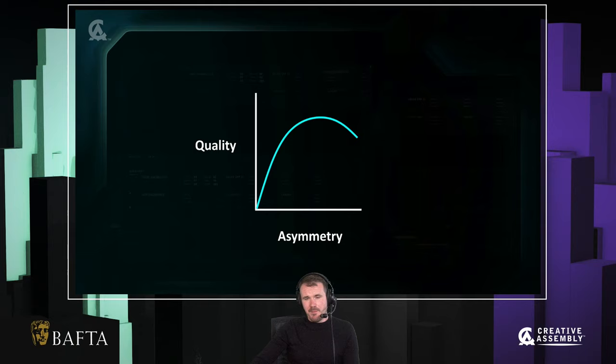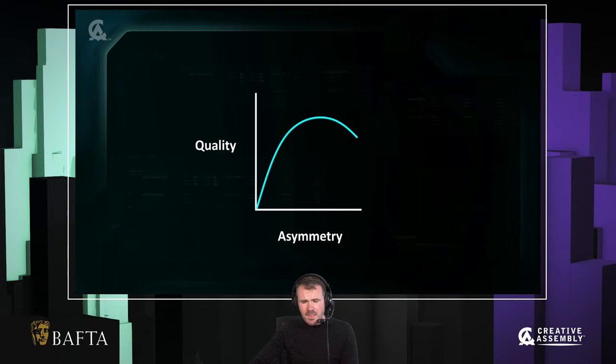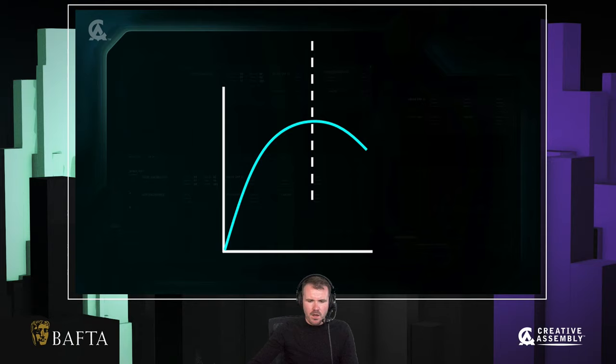I actually have a slightly different theory. My theory is that yes, initially as asymmetry increases, so does quality, and you get that diminishing returns curve. But then at some point you're going to pass the sweet spot, and as you add more asymmetry, quality is actually going to suffer. Maybe newer systems are going to push out older ones, or you're going to push the game in a direction that's not actually that good. This really is my thesis of asymmetry in games, and I'm going to spend the rest of the talk justifying why I think this is the case.